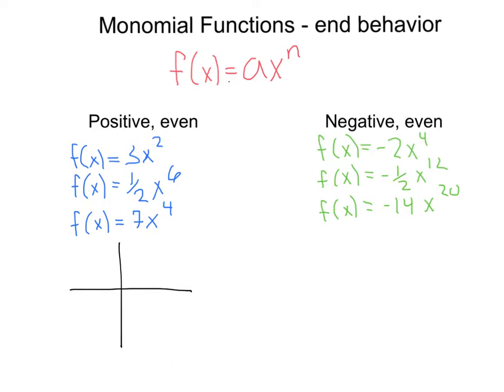our graph is always going to be going up on both ends, so both end behavior is going towards infinity. And the arrows are pointing the same direction.